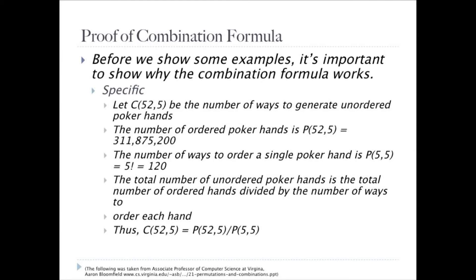The total number of unordered poker hands is the total number of ordered hands divided by the number of ways to order each hand. Thus, we see that C(52,5) is equal to P(52,5) over P(5,5).